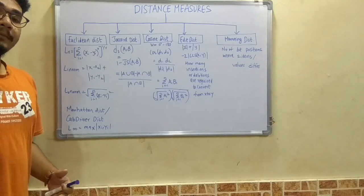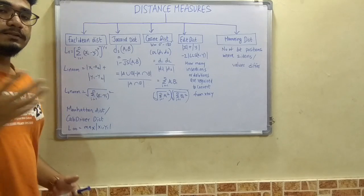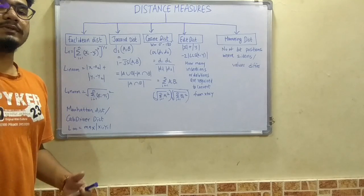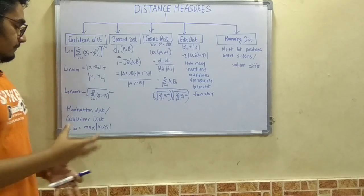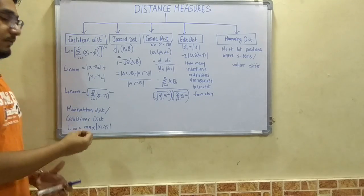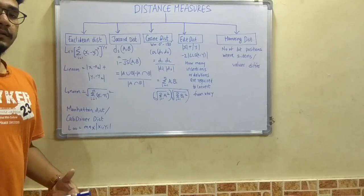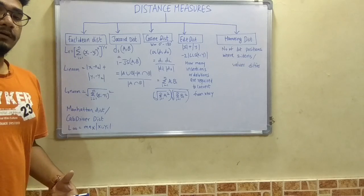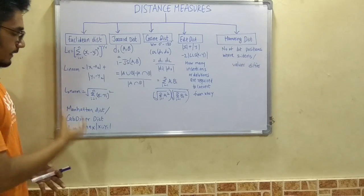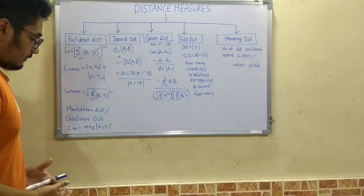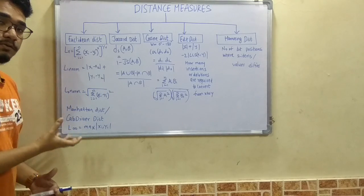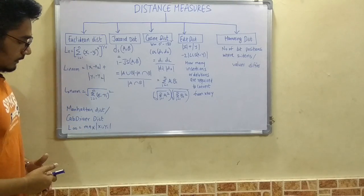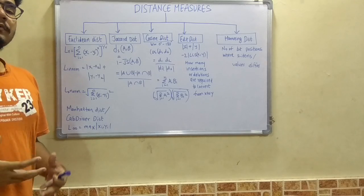Next we have the Manhattan distance. Manhattan distance is basically the distance between two cities; Manhattan is actually a city where this distance is calculated, so the name comes from that city. It is also called the cab driver distance.